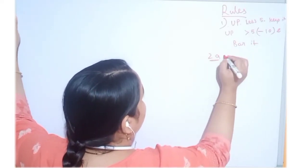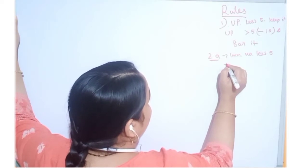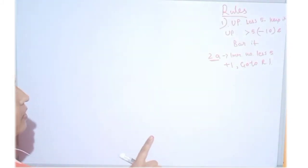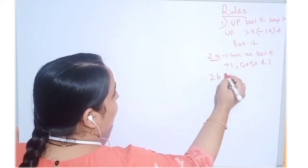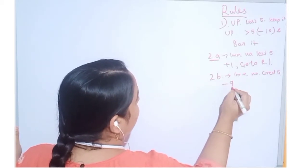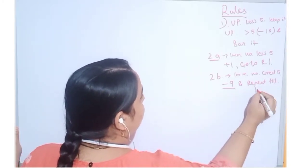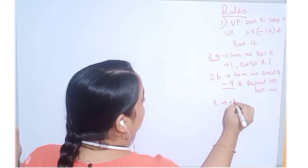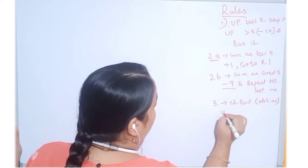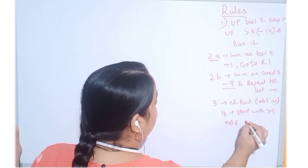Rule number 2A says: if the immediate number is less than 5, then we have to add 1 to it. Rule number 2B says: if the immediate number is greater than 5, then we have to subtract from 9 and repeat this process till the last number. Rule number 3 is a checkpoint wherein we need to observe the number — if it starts with greater than 5, add 0 to it.